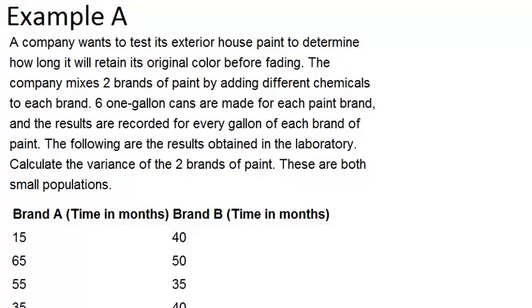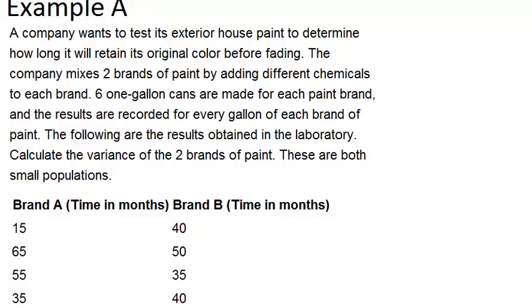The company mixes two brands of paint by adding different chemicals to each brand. Six one-gallon cans are made for each paint brand, and the results are recorded for every gallon of each brand of paint. The following are the results obtained in the laboratory, and we can see this table below.